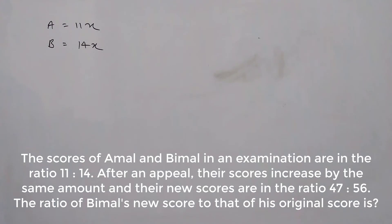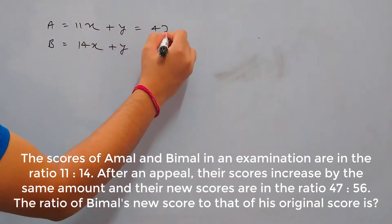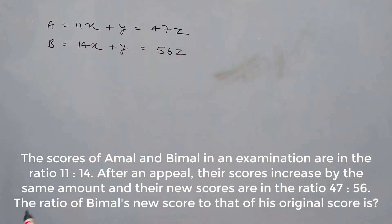After an appeal, their scores increase by the same amount and their new scores are in ratio 47 is to 56. So let's say after appeal, because both of their scores increased by same amount, let's add y to both. This is the increased score and now the new score is in the ratio 47 is to 56. So we can say this is 47z and 56z.